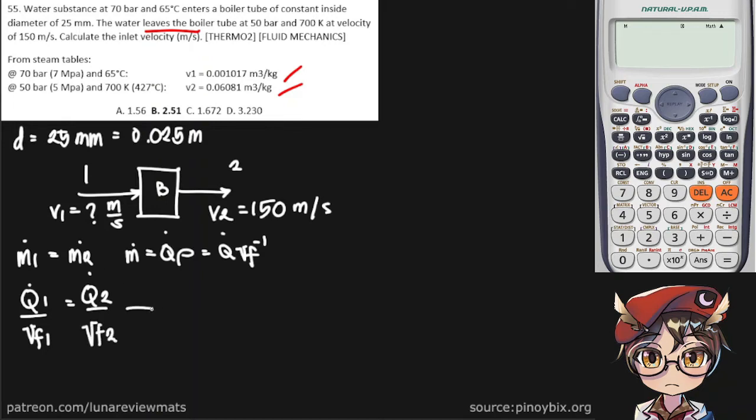Now if you remember the continuity equation, volume flow rates can be given by multiplying the cross-sectional area of our pipe by the velocity, and of course don't forget to include the specific volume and do the same to the other side.